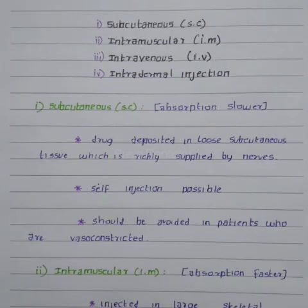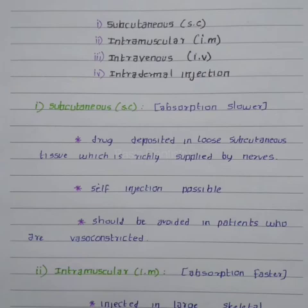There are four types of parenteral routes: subcutaneous, intramuscular, intravenous, and intradermal. In subcutaneous injection, absorption is slower and the drug is deposited in the loose subcutaneous tissue, which is richly supplied by nerves. Self-injection is possible, but it should be avoided in vasoconstricted patients.